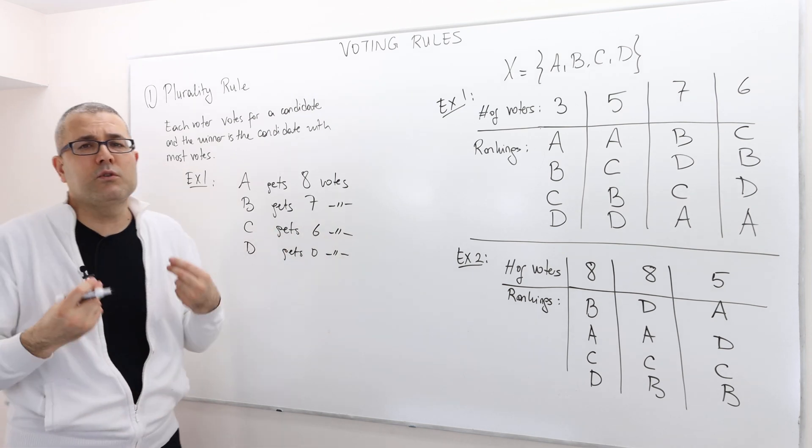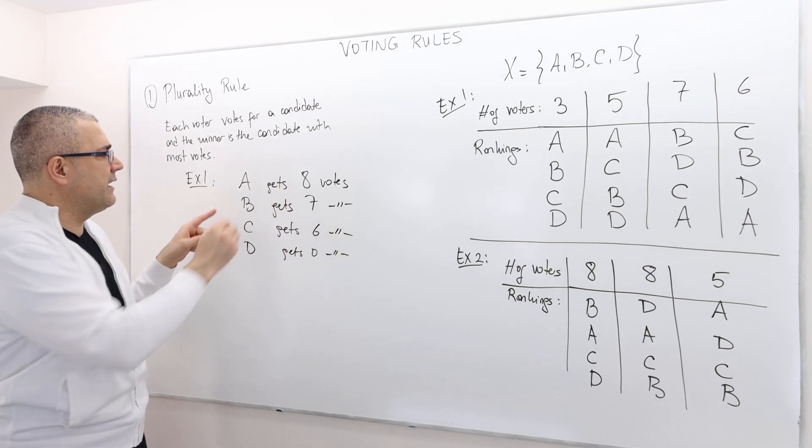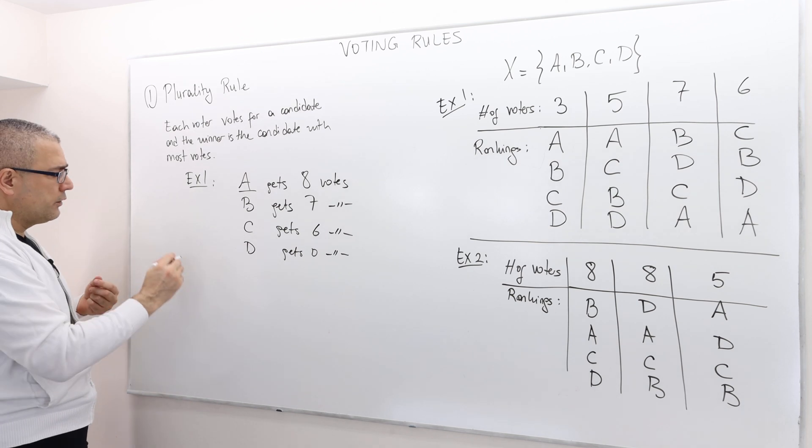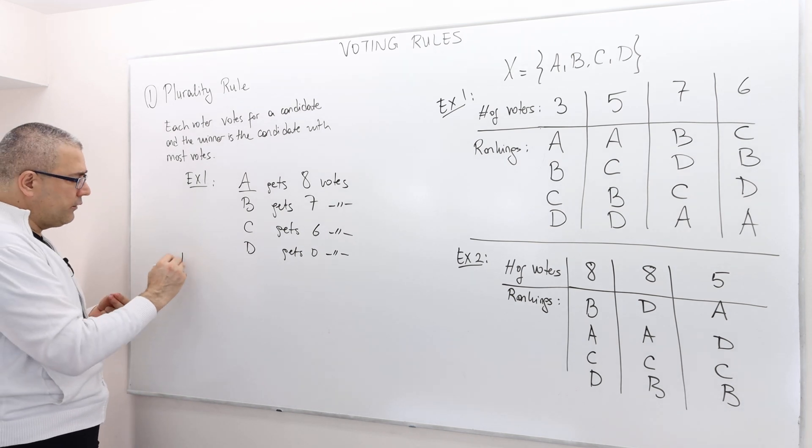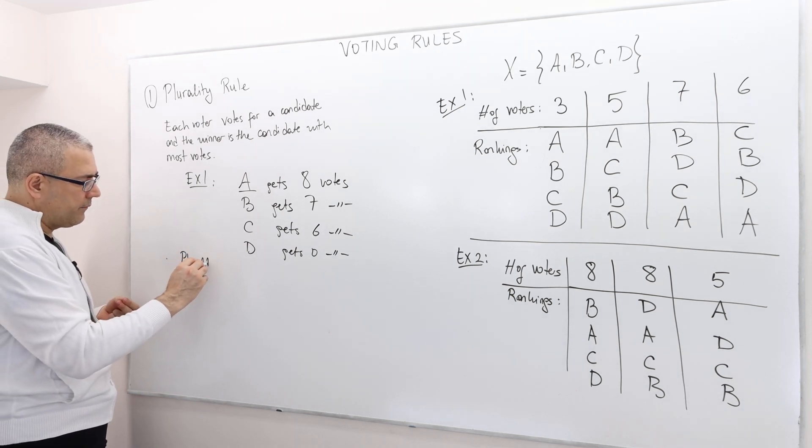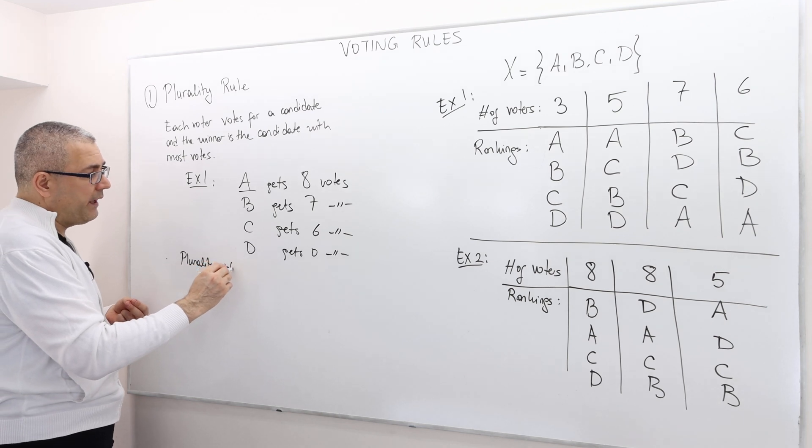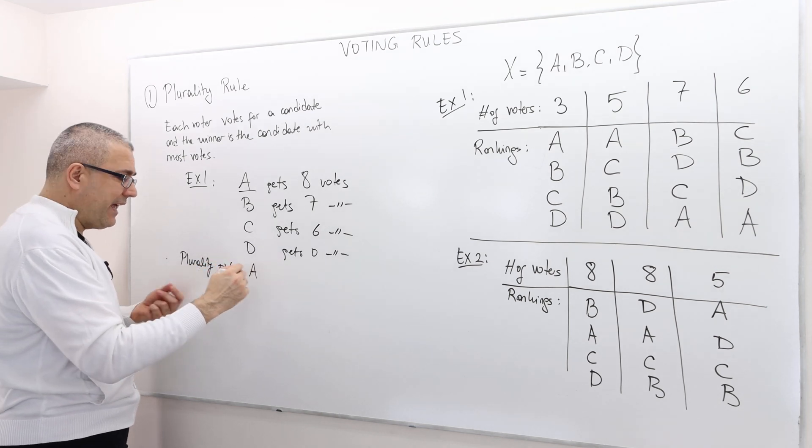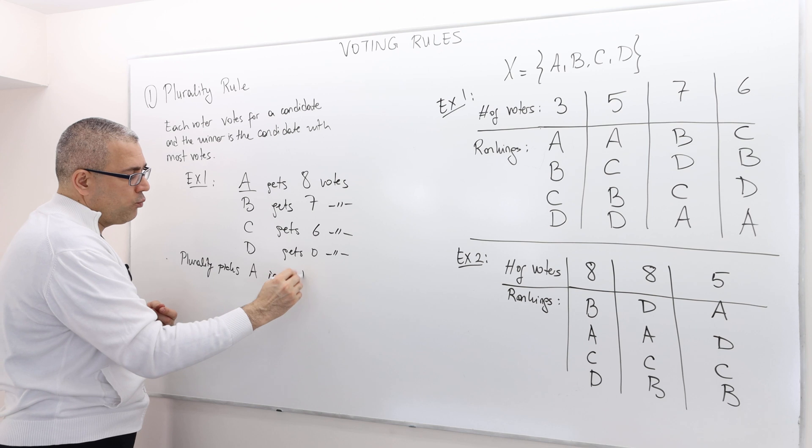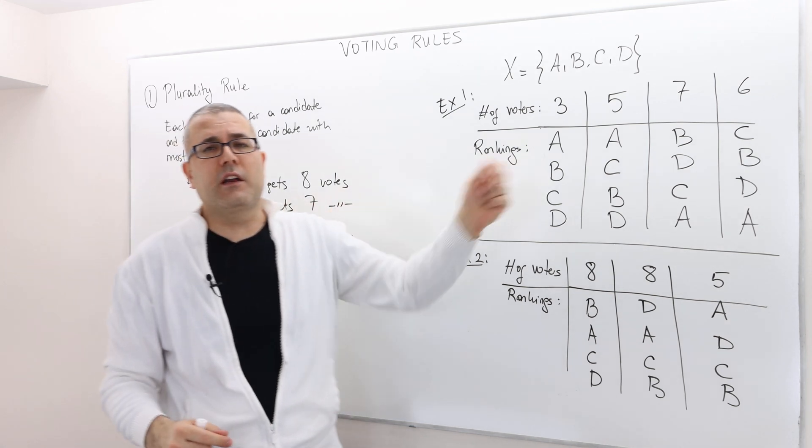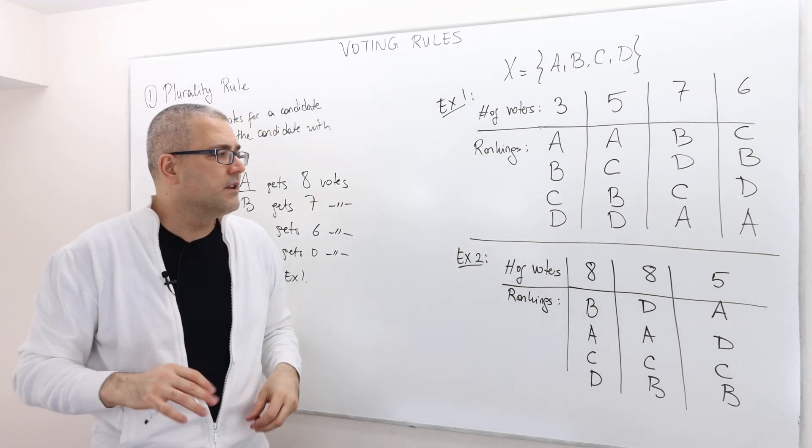Well, who gets the most votes? Obviously, candidate A. So, therefore, the plurality rule is going to, plurality, selects or picks candidate A in example one. So, if the preferences are in this fashion, that's it. It's very simple.